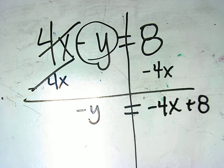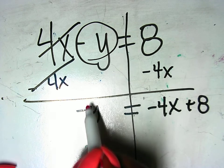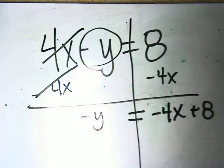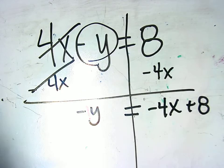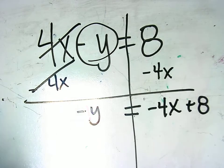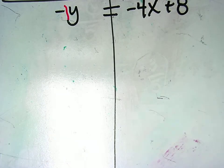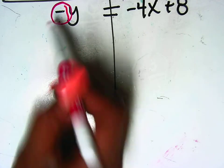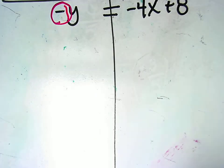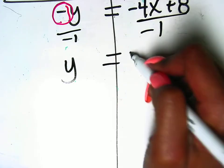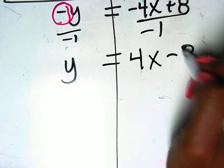Now here, remember that even though I didn't write it, there's a number in front of y. There's a negative 1 right there. So, to get y by itself, it is so bright right there. I have to get rid of this negative 1. So I'm going to divide everything by negative 1. You get y is equal to 4x minus 8.